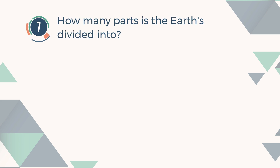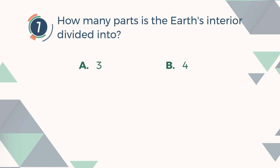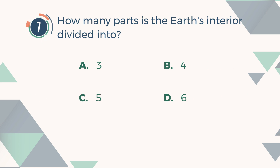Number 7. How many parts is the Earth's interior divided into? A. 3. B. 4. C. 5. D. 6.